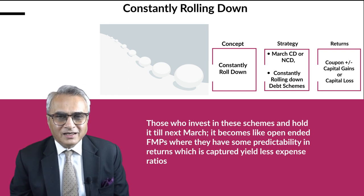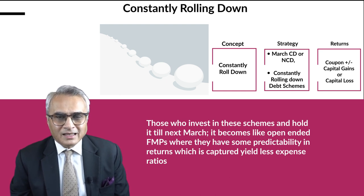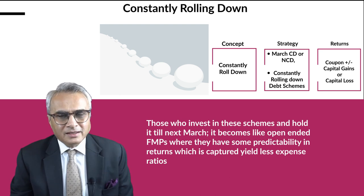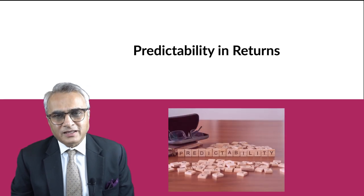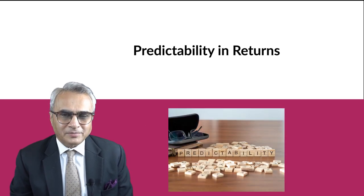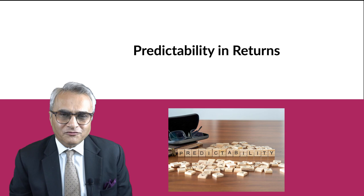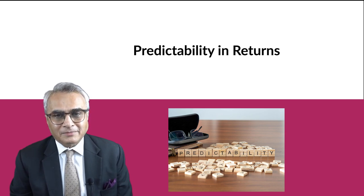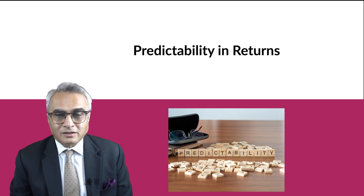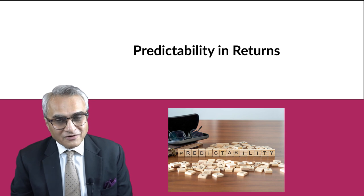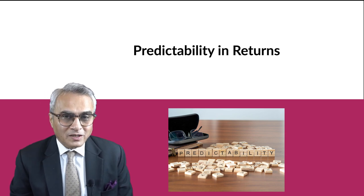So in a constantly rolling down situation, it becomes like an open-ended FMP where the investor has a choice of investing at any point when interest rates have gone up and holding it till residual maturity. This concept also gives predictability of returns. If you invested in March with a 10% captured yield and hold it till the next March, your return should be 10% less the expense ratio.